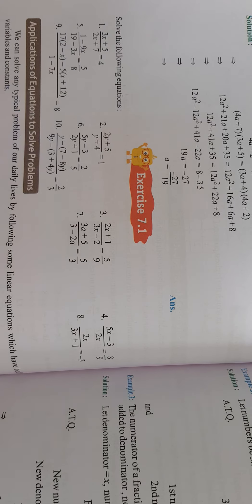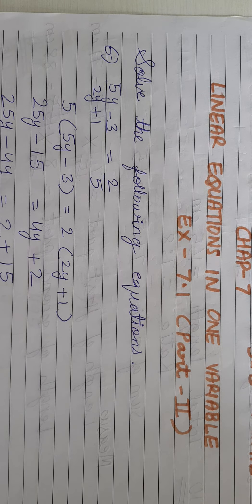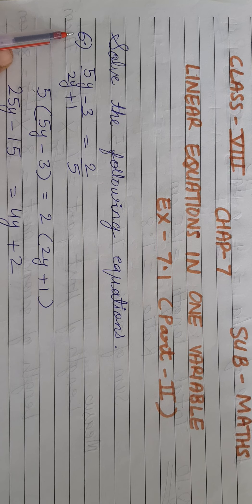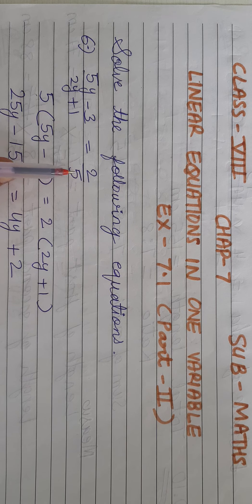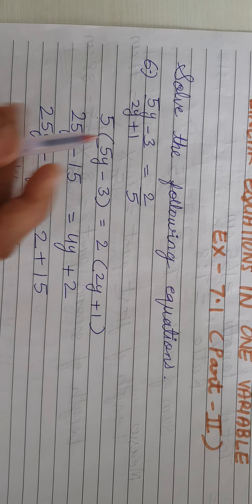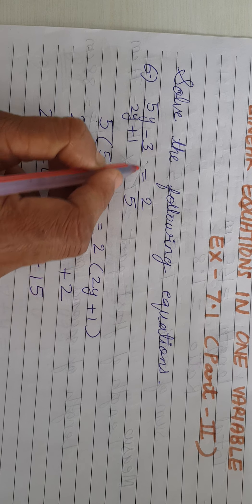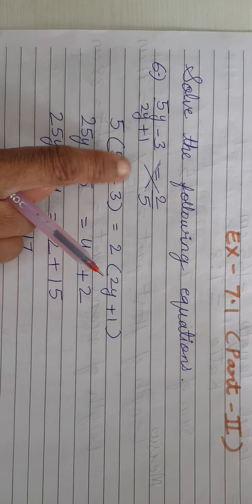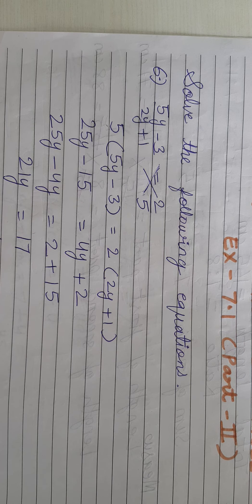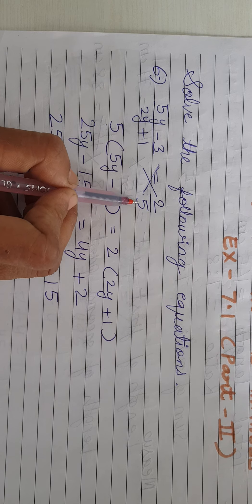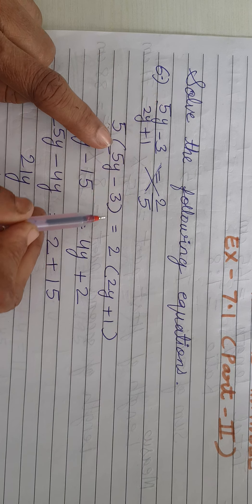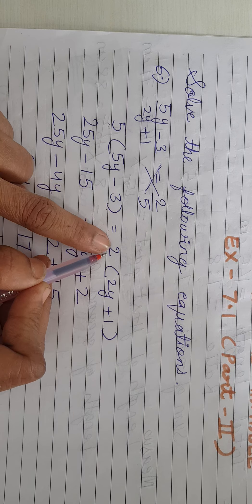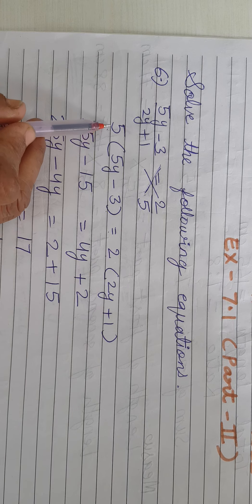Question 6 is written in this notebook. See here — this is question number 6: (5y minus 3) upon (2y plus 1) equal 2 upon 5. So we do cross multiply it.